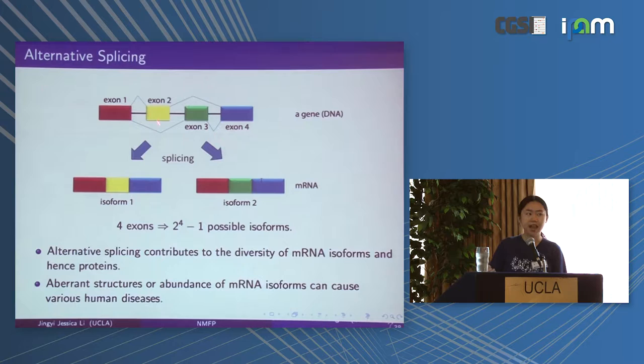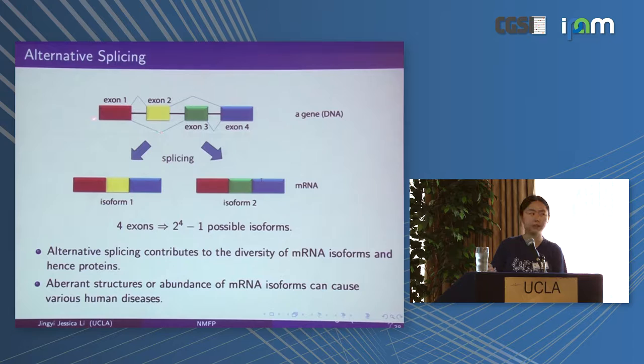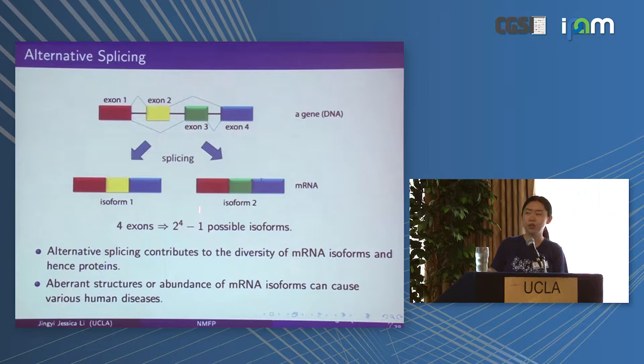Alternative splicing is the step during transcription that governs this phenomenon. Suppose a gene has four exons — these exons are pieced together into different isoforms, and the parts between exons called introns are often spliced out. Theoretically, if we consider these exons, the number of possible isoforms is two to the number of exons minus one, because we need to include at least one exon. This is a very large number.